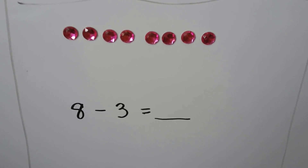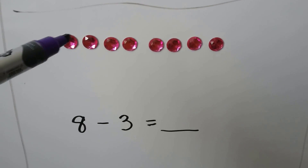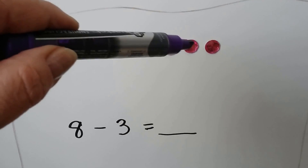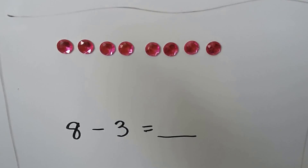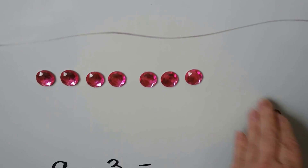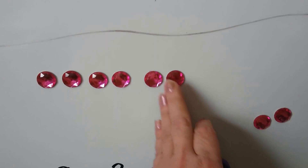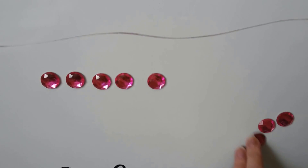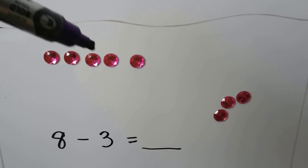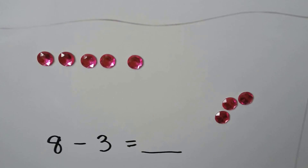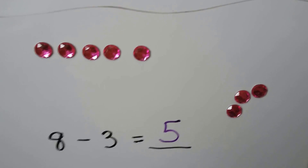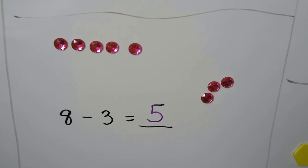Eight minus three. One, two, three, four, five, six, seven, eight. We take three away: one, two, three. Now there are one, two, three, four, five gems left. Eight minus three is equal to five.